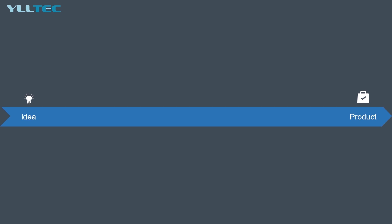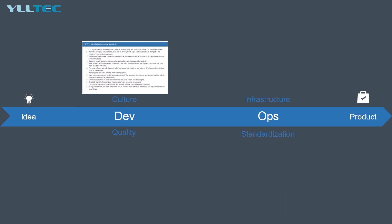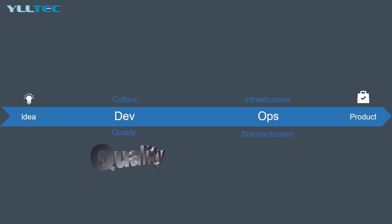You have an idea. You want to create a product or a service. But how do you do that? The best way is to adapt to the DevOps practices. You want to adapt to an agile culture, put people first, and follow the agile principles and guidelines.